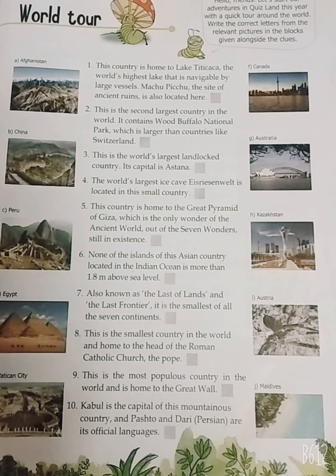Ninth: this is the most populous country in the world and is home to the Great Wall. Have you heard about the Great Wall? What is the meaning of 'populous'? Populous means jahan ki jo population hoti hai, sabse zyada hoti hai — a large number of people are there. Your answer is China.